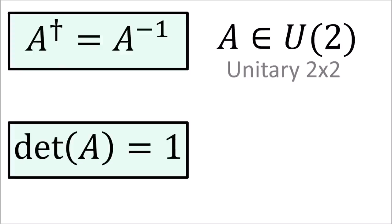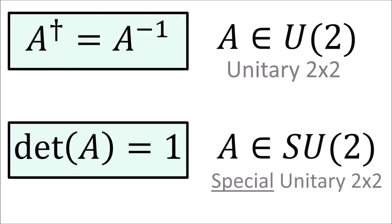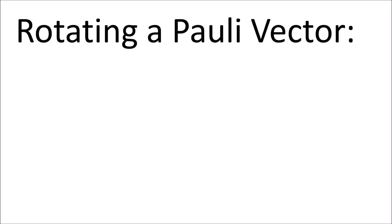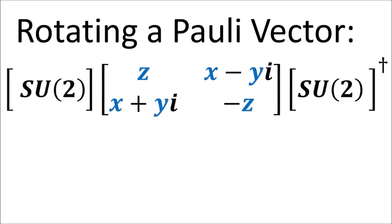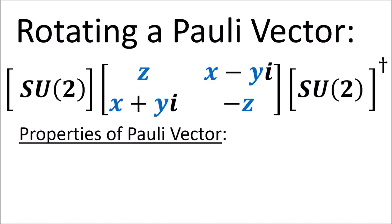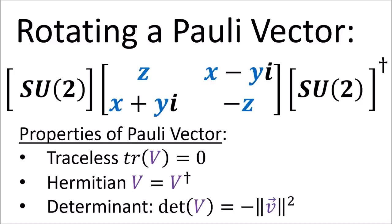The fact that A dagger equals A inverse means that A is a member of the group of 2x2 unitary matrices, U(2). And the fact that it has a determinant of 1 means it's from the group of 2x2 special unitary matrices, SU(2), where the word 'special' means the determinant is 1. So what we've shown is that in order to rotate the polyvector by some angle, we do a double-sided matrix transformation with SU(2) matrices. This is a direct result of polyvectors being traceless, Hermitian, and having a determinant equal to the negative squared length of a vector, which must be unchanged by rotations.